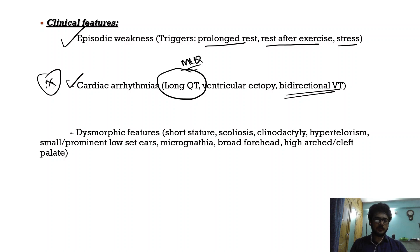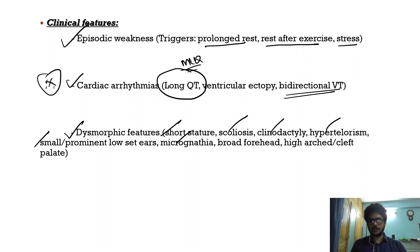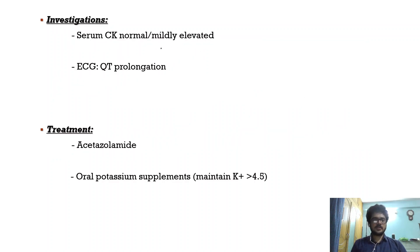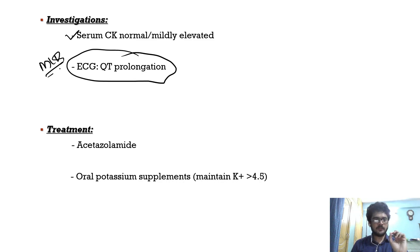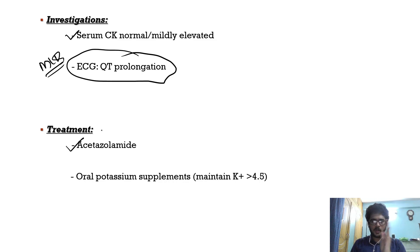The dysmorphic features include short stature, scoliosis, clinodactyly, hypertelorism, small or prominent low-set ears, micrognathia, broad forehead, and high-arched or cleft palate. For investigations, serum creatine kinase can be normal or mildly elevated — this is an important MCQ. ECG will show QT prolongation. Treatment: acetazolamide for periodic weakness, and maintain potassium in the high-normal range.